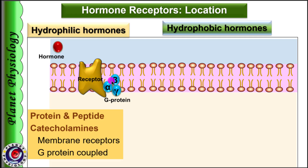These membrane receptors are usually G protein coupled receptors, i.e., they are attached to the G protein. G protein has 3 subunits: alpha, beta and gamma. The alpha subunit has binding site for GDP or GTP and also has intrinsic GTPase activity. So alpha subunit acts as transducer. There are three subtypes of alpha subunits.